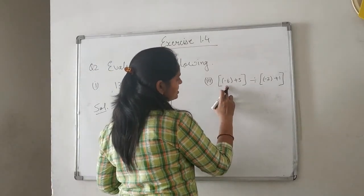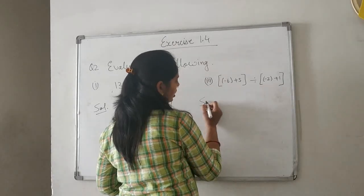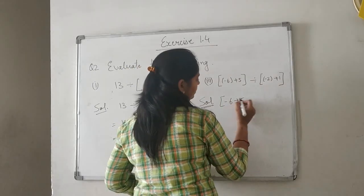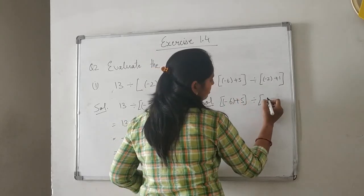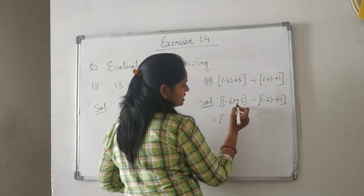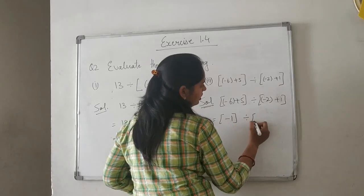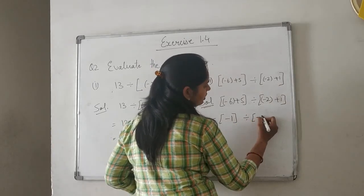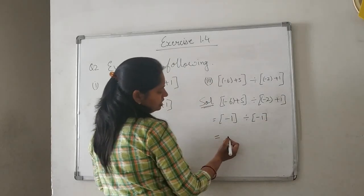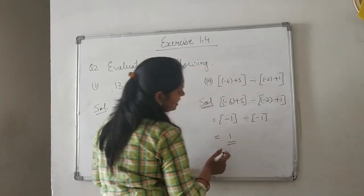Next: (minus 6 plus 5) divided by (minus 2 plus 1). First, solve both brackets. Minus 6 plus 5 gives minus 1. Minus 2 plus 1 also gives minus 1. Both are negative, so negative divided by negative gives a positive answer. 1 divided by 1 is 1, so the answer is plus 1.